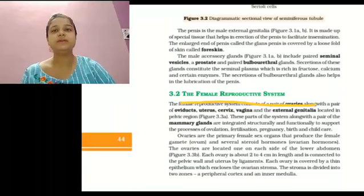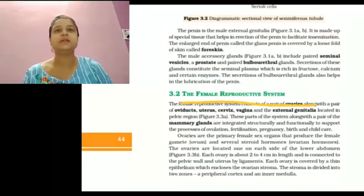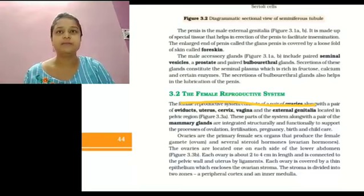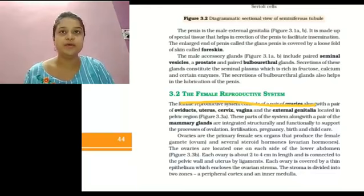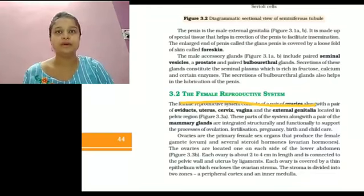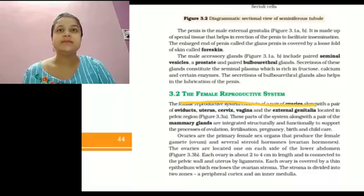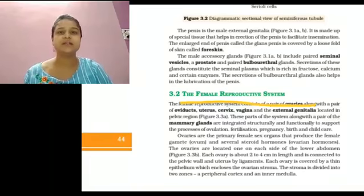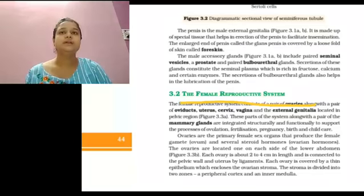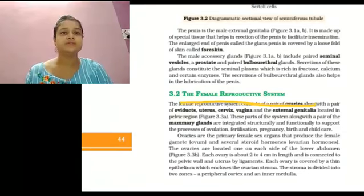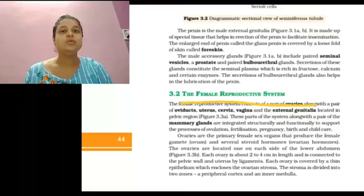Generally, the female reproductive system consists of seven parts: a pair of ovaries, oviducts, uterus, cervix, vagina, external genitalia, and mammary glands. In the next class we are discussing details about the female reproductive system.